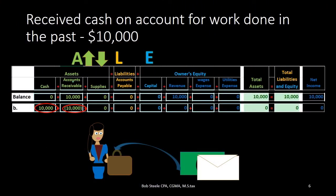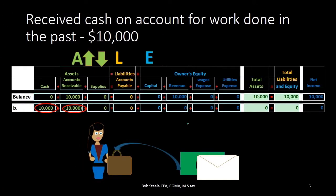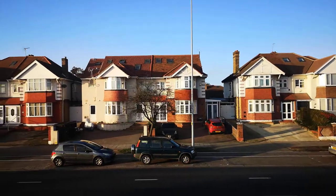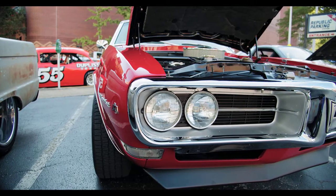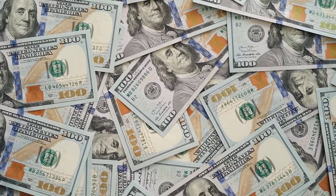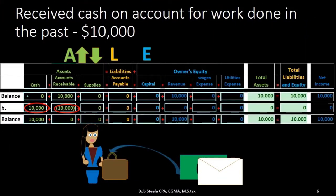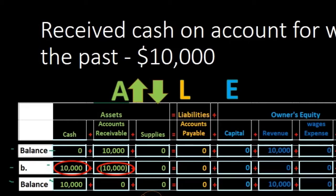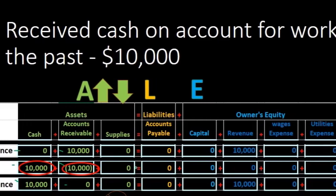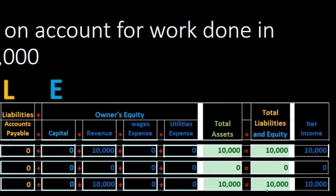This is a confusing transaction in terms of the accounting equation because there is no net effect on total assets or on liabilities and equity, and no effect on income. One asset goes up, one asset goes down. In essence, we got a better asset — cash — and lost the receivable. The receivable account was just tracking who owed us money. Prior balance in accounts receivable was $10,000; we decreased it by $10,000, so the current balance is zero. We are back in balance: total assets equal total liabilities plus equity.